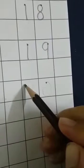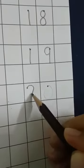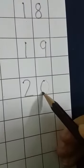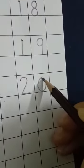Then 1 and 9 makes 19. Then 2 and 0 makes 20.